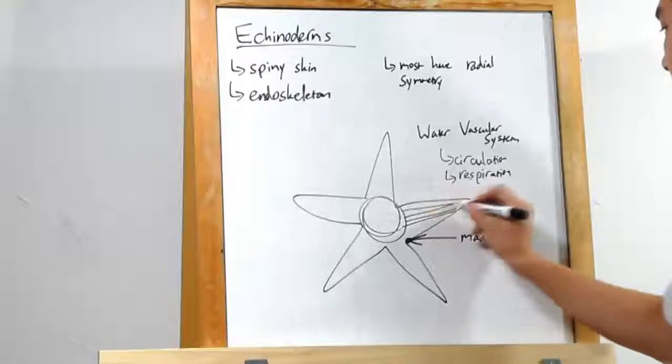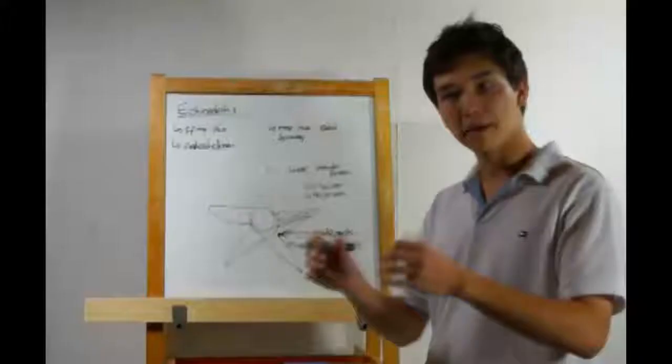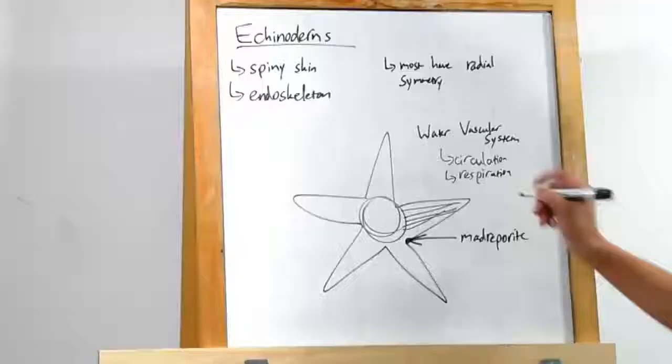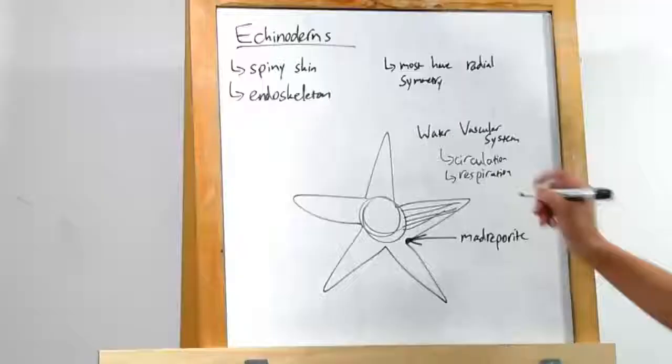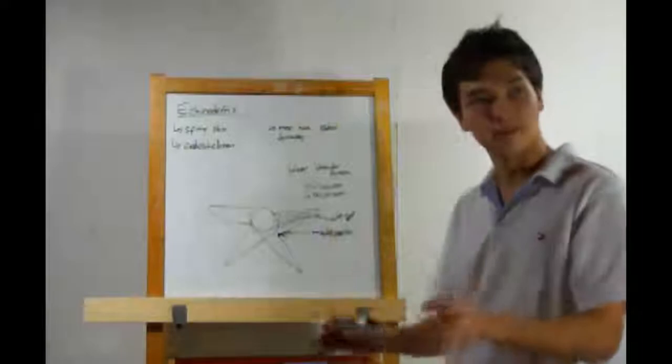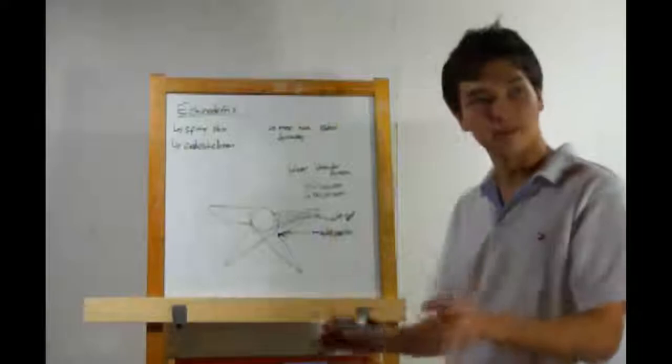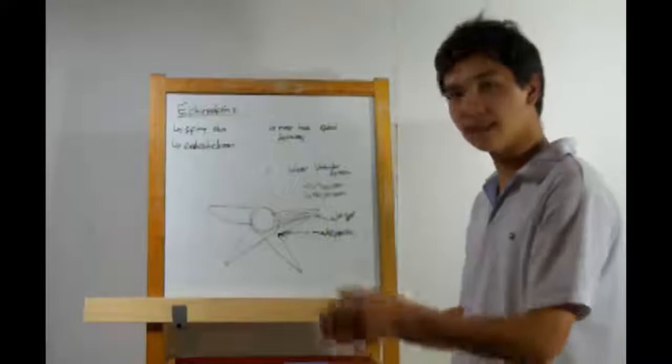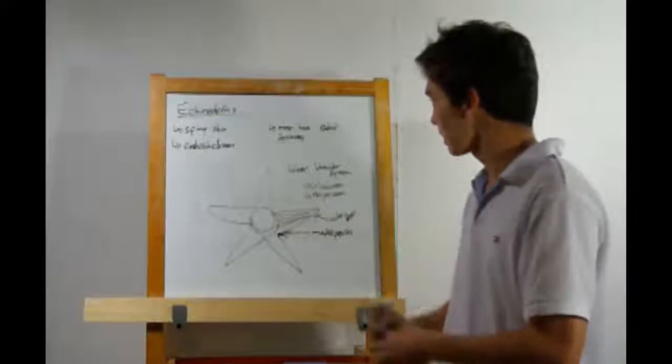And what the water vascular system looks like, it's got a bunch of canals leading out into each of the arms that pumps water in and out. This can move materials around, but it also does this neat thing in that it controls the tube feet. If you look on any sea star or its underside, you'll find out that it has a bunch of suckers, those we call tube feet. And the water pressure that the vascular system creates can actually allow it to stick to things, to move, and in some cases pry open clamshells and thereby get food.